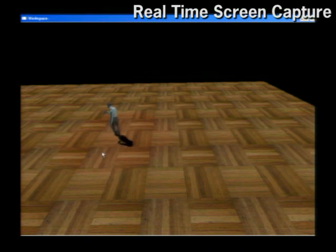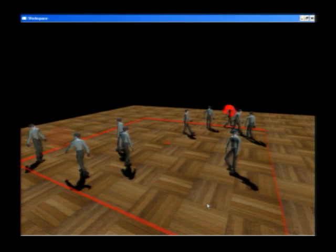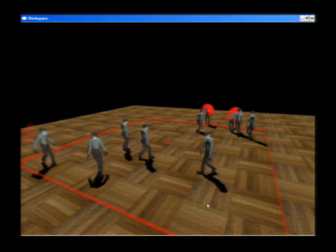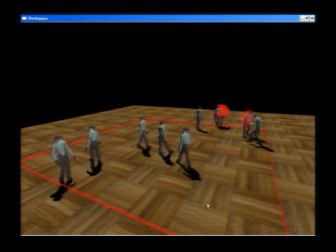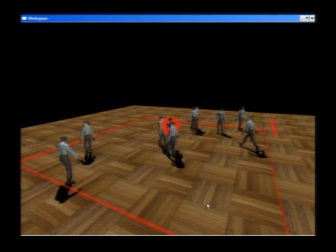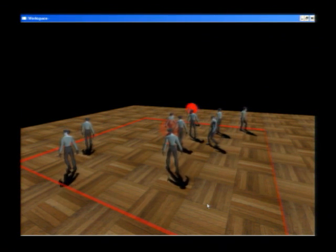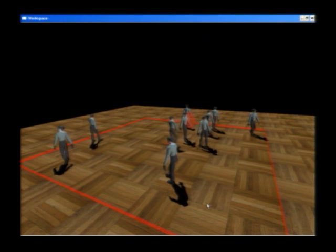Our method also allows repetitive pushes. This is an example application where a crowd of people is confined in a restricted space. When they bump into each other, or the boundary of the space, they are pushed back.